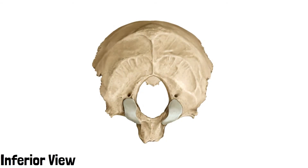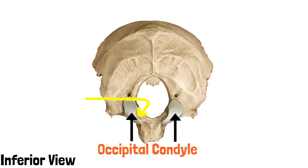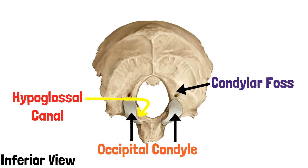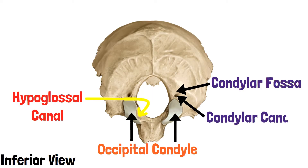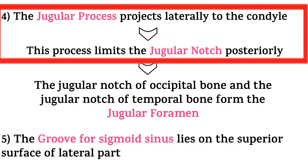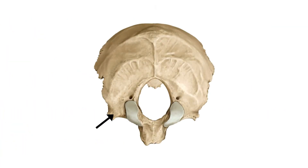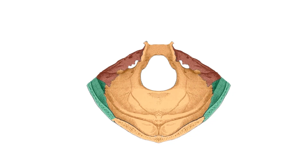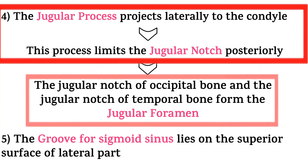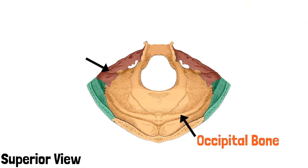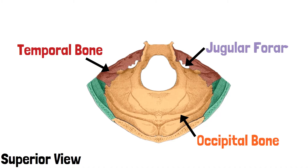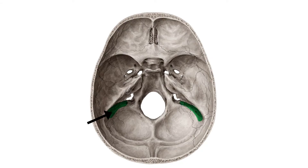In the inferior view of the bone, this is the occipital condyle which articulates with the atlas. The base of this occipital condyle is pierced by the hypoglossal canal. This is the condylar fossa present behind the occipital condyle, penetrated by the condylar canal. The jugular process projects laterally to the condyle and limits the jugular notch posteriorly. In the superior view, the bone shaded in orange is the occipital bone. The jugular notch of the temporal bone (shaded in red) along with the jugular notch of the occipital bone forms the jugular foramen. This is the groove for the sigmoid sinus on the superior surface of the lateral part.